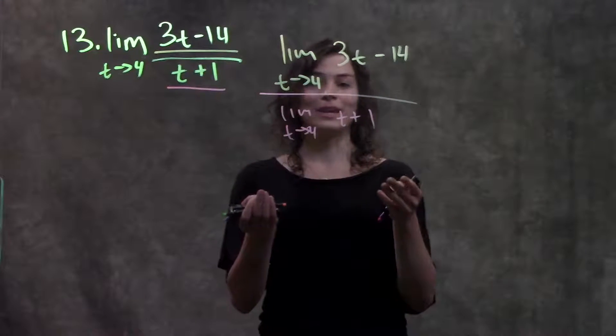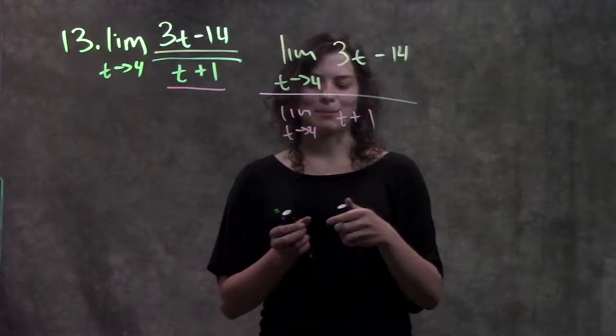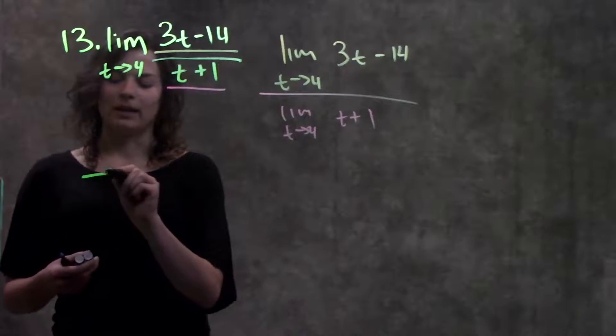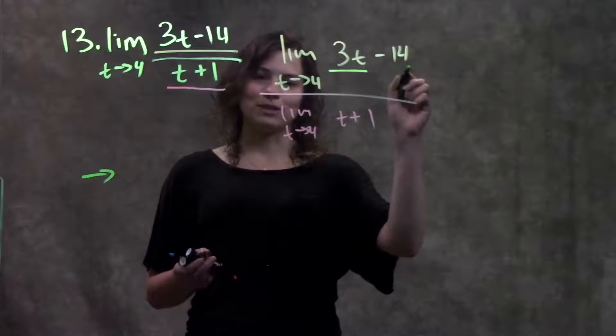Okay, but now looking at this part, I can separate out both the numerator and the denominator one step further. So bring it down here. I can use my addition law and separate out the 3t and the 14.